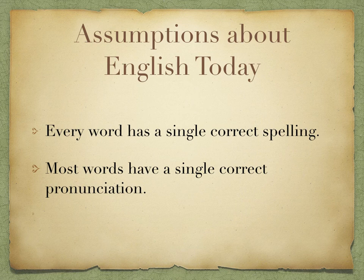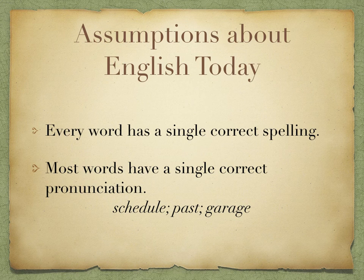Another assumption that we have relates to how words are pronounced — the idea that there's a single correct pronunciation. Here too, you might think of some exceptions right away. These exceptions might include words that are different in American English versus British English, like schedule versus schedule, past versus past, garage versus garage. Again, these are a difference between what's correct in American English versus what's correct in British English — they're not really exceptions to this rule.